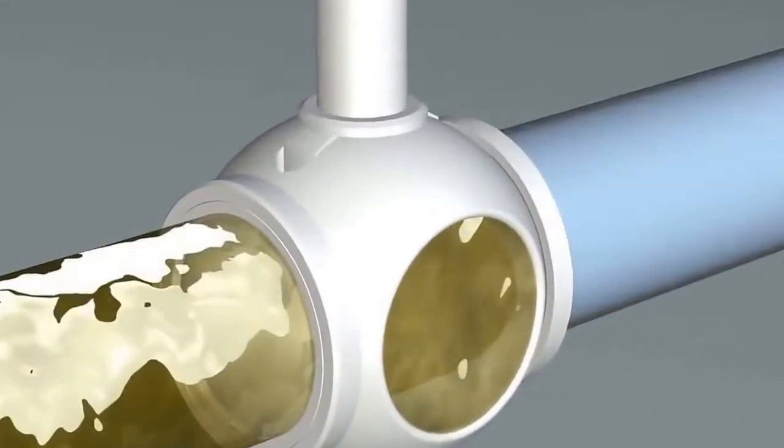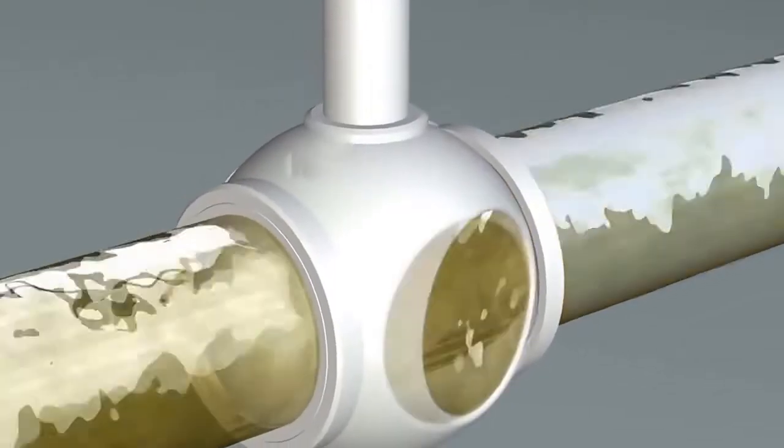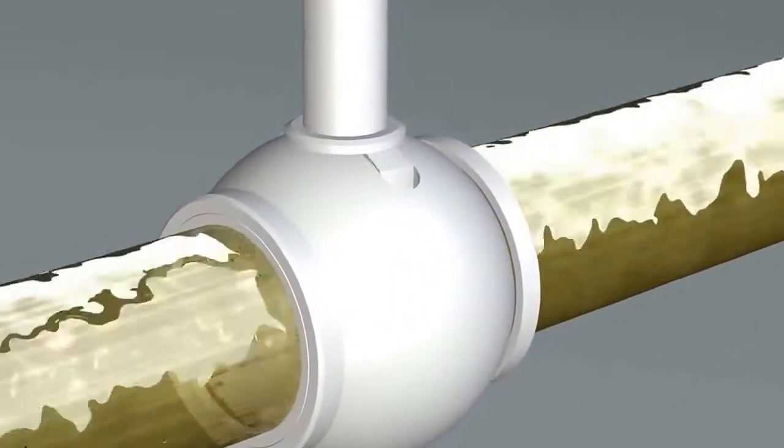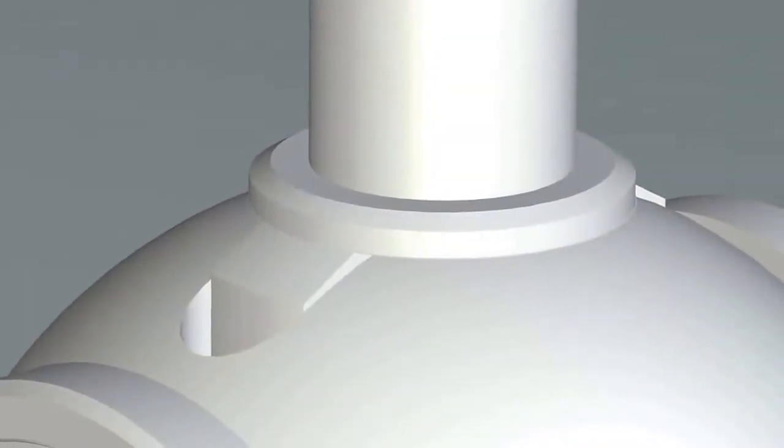The two-piece ball and stem design is proven over many years and continues to work successfully in the majority of applications. However, in rare instances, the plastic-to-plastic joint between ball and stem can lead to play between the stem and the shaft.